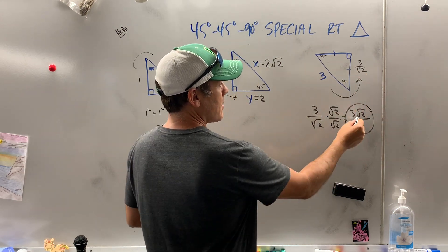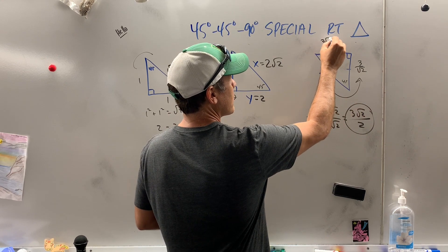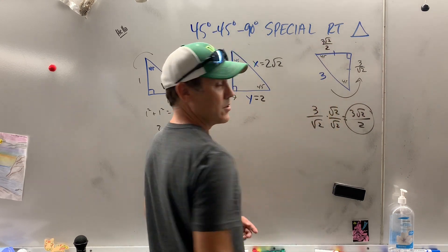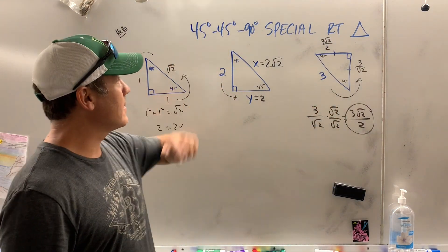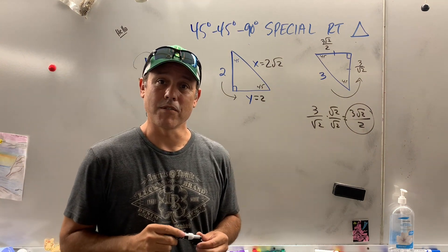Well, this side is 3 radical 2 over 2. This side is 3 radical 2 over 2 as well. So that is how you do 45-45-90 special right triangles.